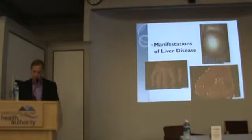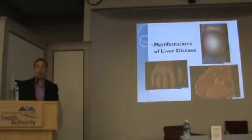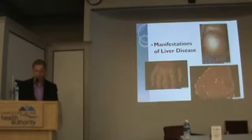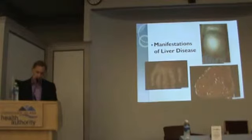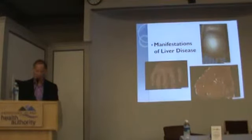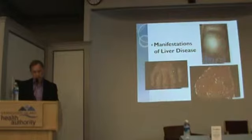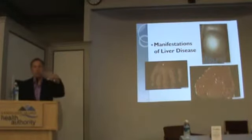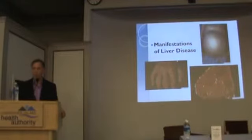This is cirrhosis. This is what the liver looks like with the nodules. You can actually see that on a CT scan or MRI. This is some of the cutaneous manifestations — the sort of chronic skin conditions associated with hepatitis C.